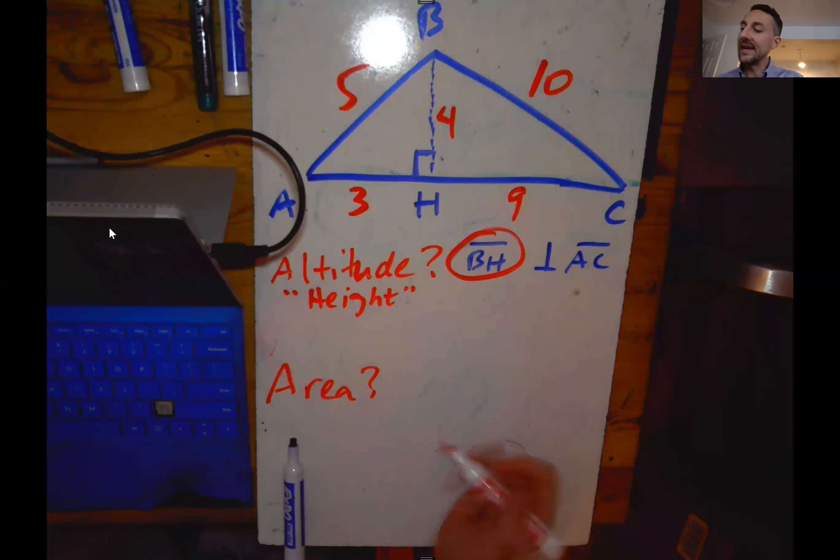Now to find the area of a triangle we know that that is one-half times the base times the height. So the new word for height is now altitude.